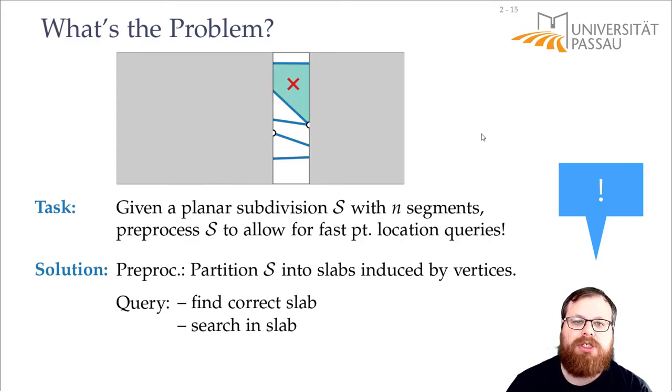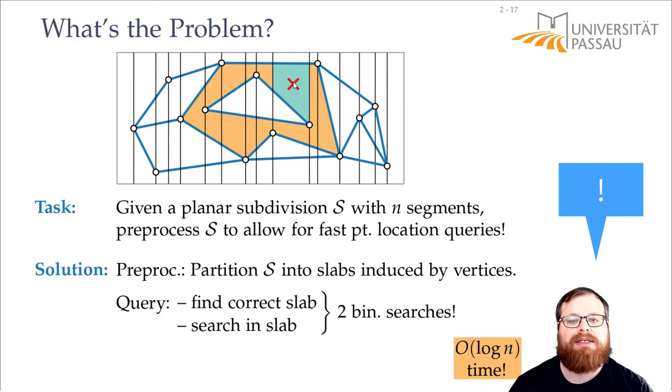And then we find this region. And now if all these smaller regions in the slabs know which larger region they belong to then we can answer the query in order of log n time. So with just two binary search trees, one for the x coordinates of all these vertices of the input and one for the y coordinates of these regions, we can figure out where our point lies in.